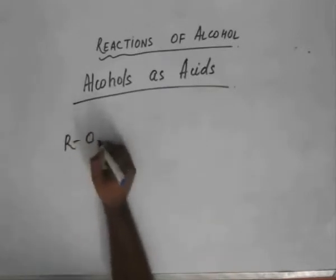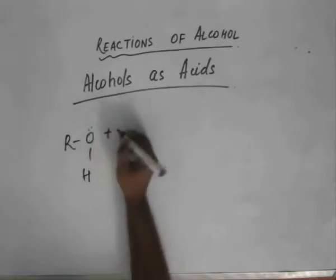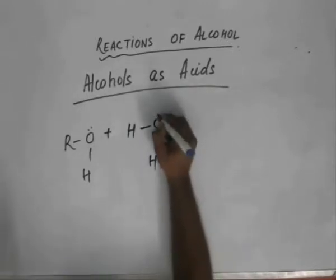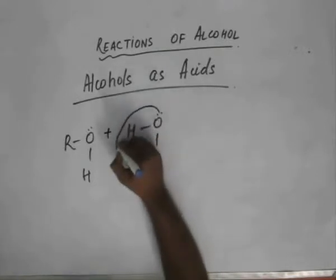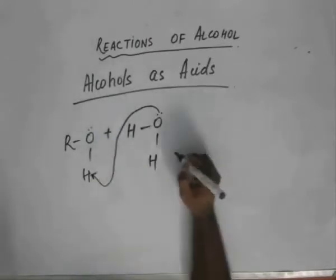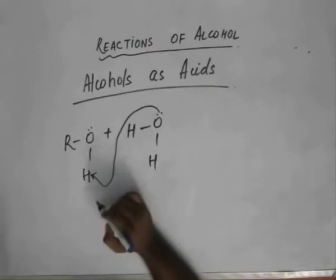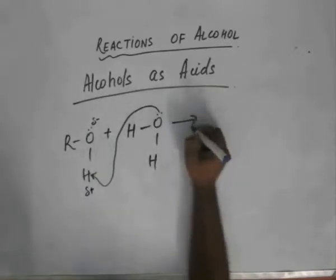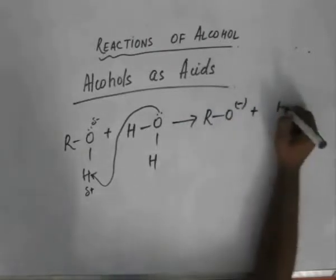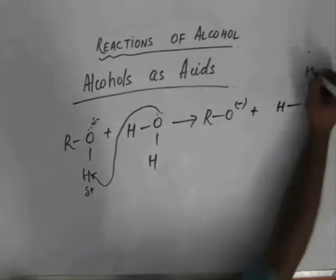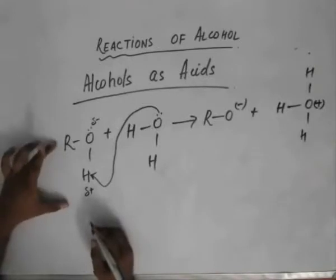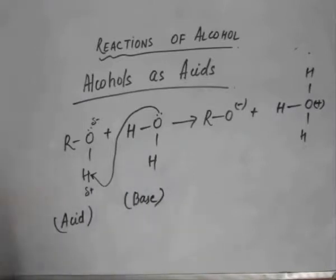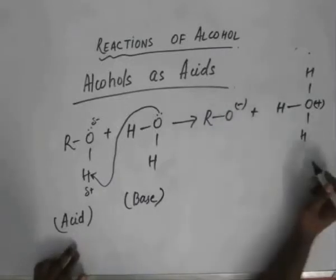Let me write this reaction as R–O–H with water. This oxygen atom attacks this hydrogen atom — basically it extracts this hydrogen atom because of the polarization of bonds. We are left with RO⁻ and H₃O⁺. So this alcohol molecule acted as an acid, the water molecule acted as a base. We got its conjugate base and its conjugate acid.